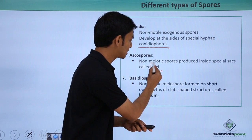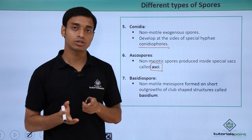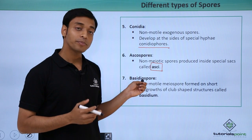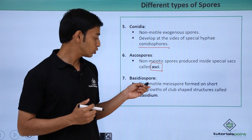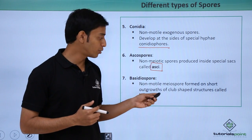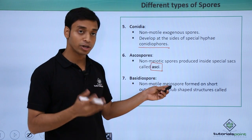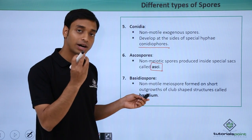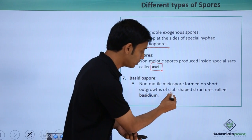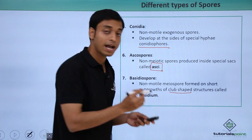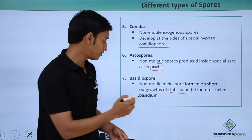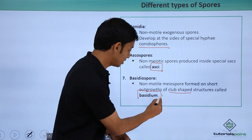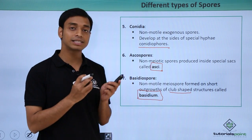The last category is basidiospores. These are also non-motile meiotic spores formed on short, club-shaped outgrowths called basidium. Inside the basidium, these basidiospores are formed.